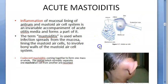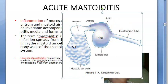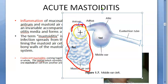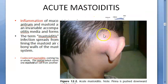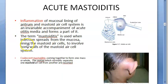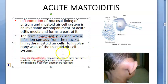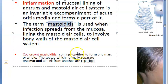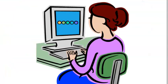Mastoiditis is the inflammation of the mucosal lining of the antrum and mastoid air cell system. The middle ear connects to the aditus, antrum, and mastoid air cells behind it. So inflammation of all this is called mastoiditis — it is behind your ear. This is how acute mastoiditis looks: the pinna is pushed downward and forward. The term mastoiditis is used when the infection spreads from the mucosa lining the mastoid air cells to involve the bony wall of the mastoid air cell system.